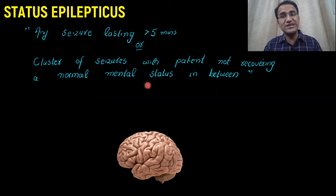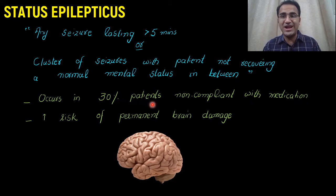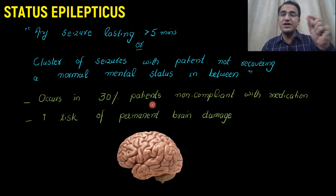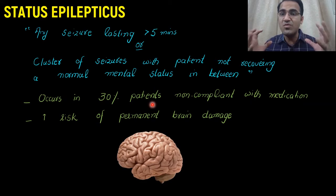It occurs in 30% of patients who are non-compliant with their medication. These patients are already diagnosed with epilepsy and are non-compliant with medication, and therefore they develop status epilepticus. Status epilepticus increases the risk of permanent brain damage, since there is abnormal electrical activity that can damage brain cells.